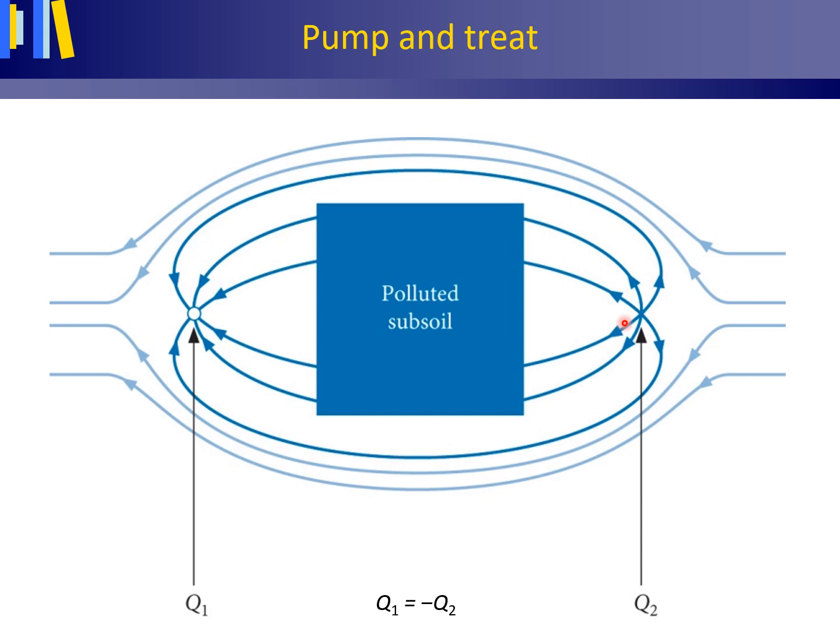When the injection rate Q2 of well 2 is taken equal to the pumping rate Q1 of well 1 — thus Q1 equals minus Q2 — and with the right setup concerning the distance between the wells and the actual pumping rate, the polluted area is captured in a symmetrical water lens isolated from the regional groundwater flow system, as evident from the streamlines given in dark color. Because of the continued pumping and recharge, the subsoil will get cleaner and cleaner with the passing of time.